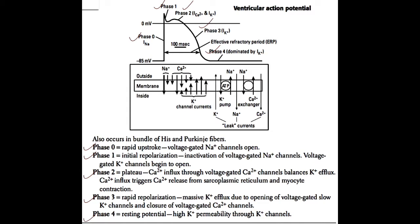In a ventricular muscle cell, phase zero is caused by an influx of calcium into the cell. That influx occurs because of two reasons: first, there is a high concentration of sodium outside the cell, and second, the inside of the cell is more negative than the outside. So sodium has two reasons to come into the cell, and when those sodium channels are activated, the sodium can move in.